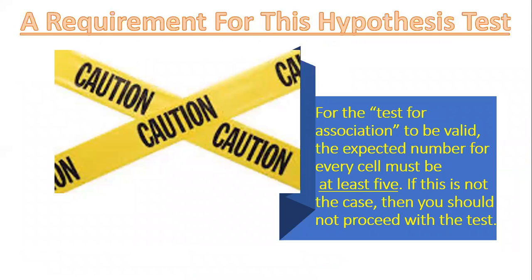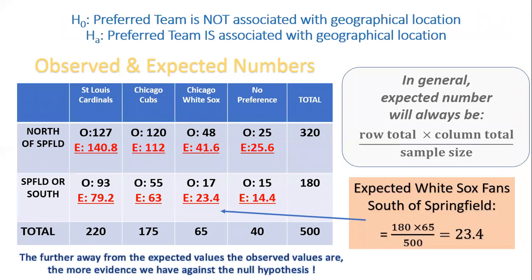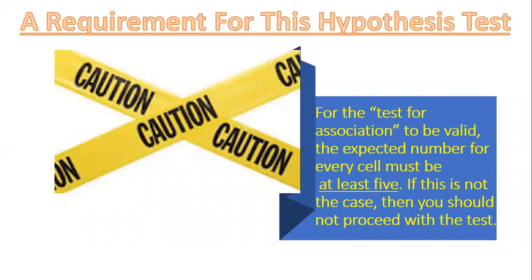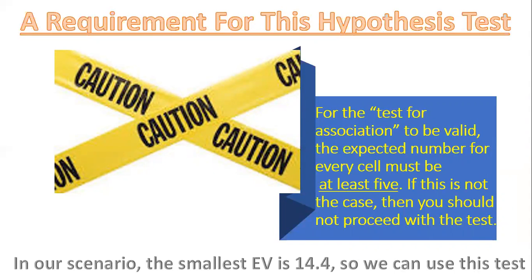Before proceeding, there is a requirement for this hypothesis test to be valid: the expected number for every cell must be at least five. If that is not the case, you shouldn't proceed with the test. In our particular case, the smallest expected value across all cells was 14.4 — the number south of Springfield with no preference — so the requirement is clearly met and we can proceed.